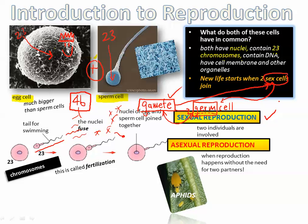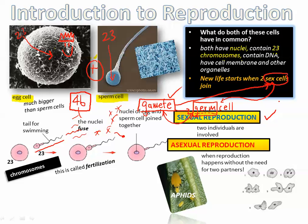There are lots of examples of asexual reproduction. A type of bug called an aphid — you can search for this on the internet to find pictures. Single-celled organisms like bacteria, protists, and amoeba can also reproduce on their own without the need for a partner.